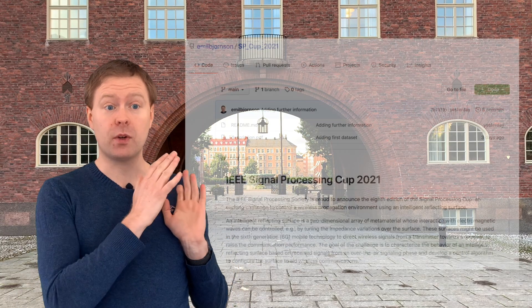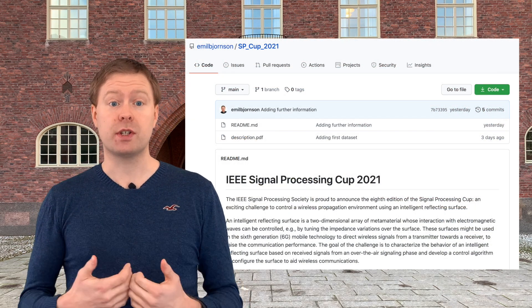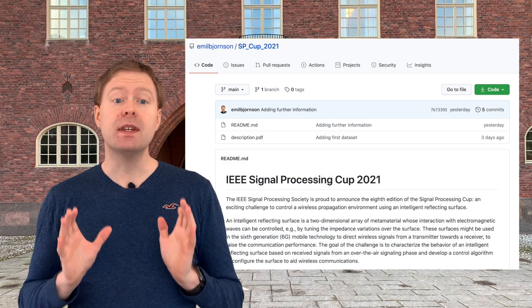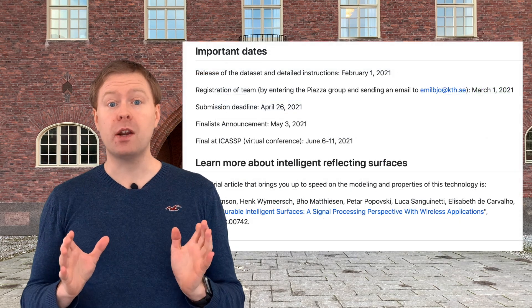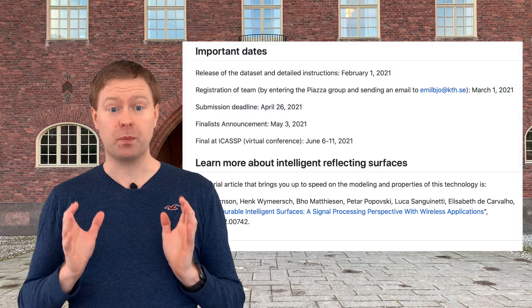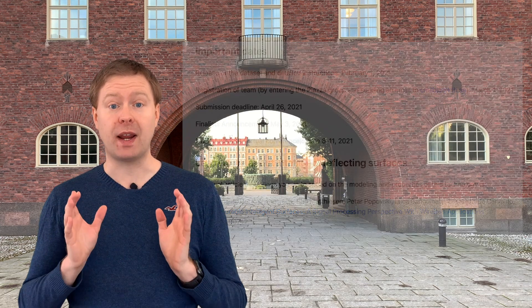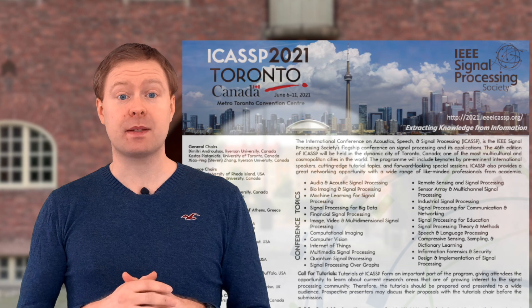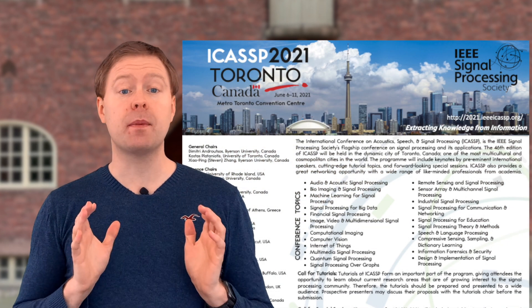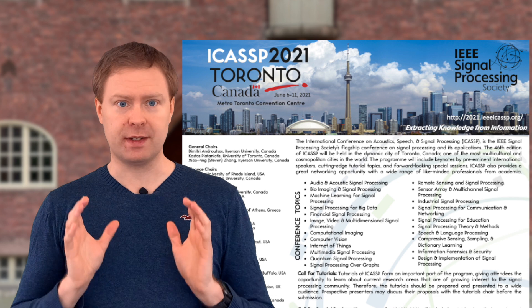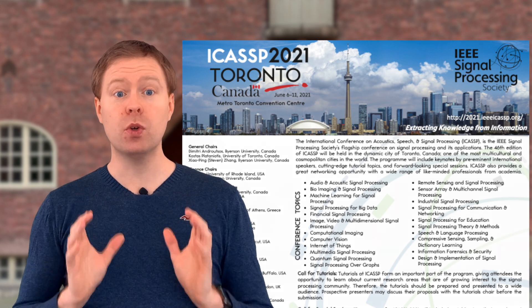You can find detailed information about this competition on the GitHub page, where you can also ask questions. Every team needs to register by the 1st of March so we know which teams are competing, and then you need to submit your contribution by the 26th of April. We will then identify the teams with the best results and invite them for a final at the ICASSP 2021 conference, which will be held virtually, where you will solve an additional task to determine who wins the grand prize of $5,000.